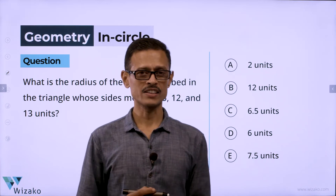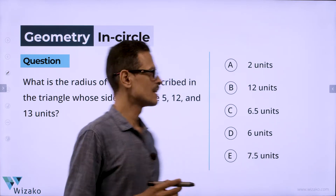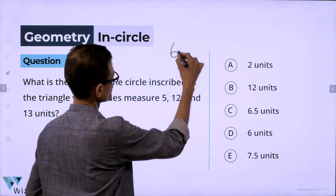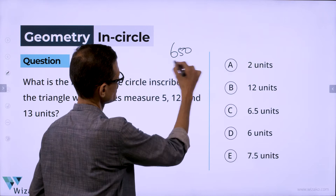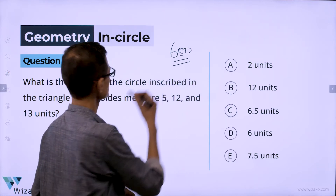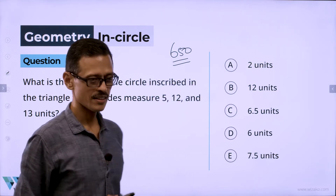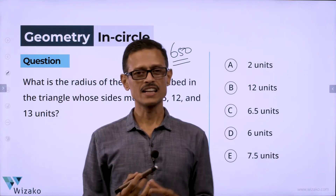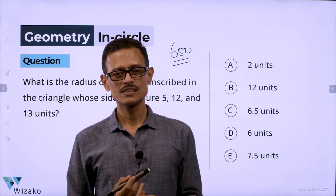This is a medium difficulty GMAT practice question. I'll classify this one as a GMAT 650 level question. It's a geometry question — specifically a property of a triangle question.